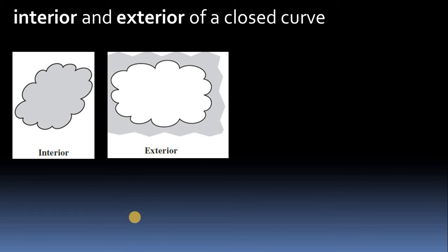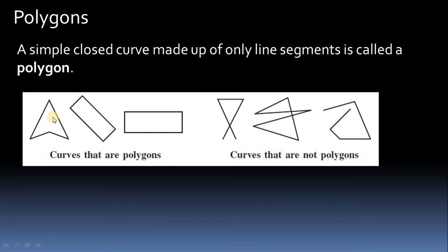Interior and exterior part of the closed curve: this is the interior part and this is the exterior part — outside the curve and inside the curve. A simple closed curve made up of only line segments is called a polygon. It consists of line segments of particular length. If a figure is closed and consists of line segments, it is a polygon; if the line segments are open and not totally closed, it is not a polygon.